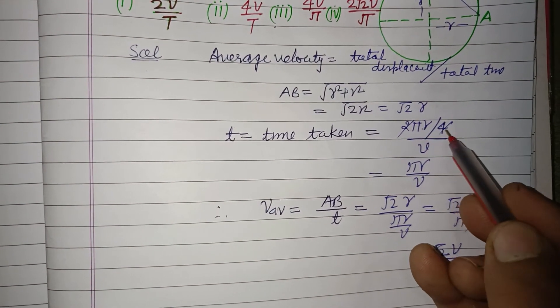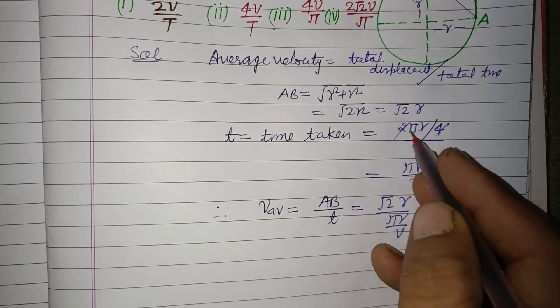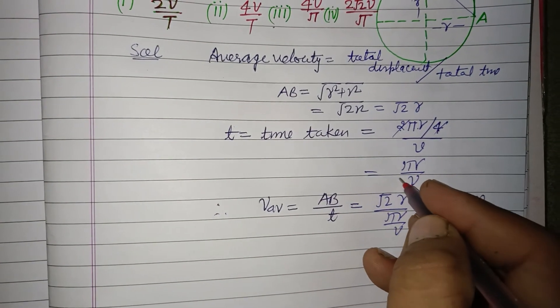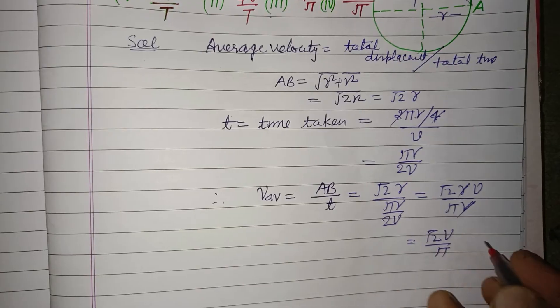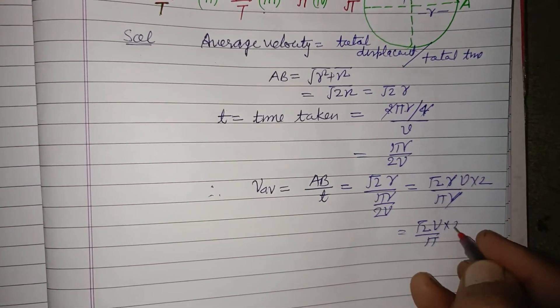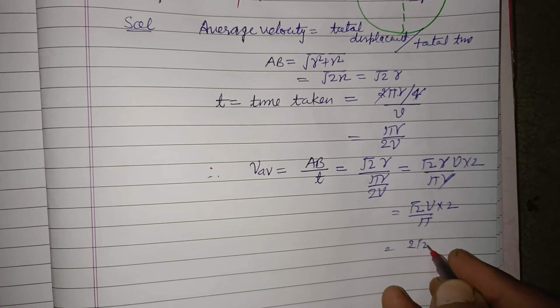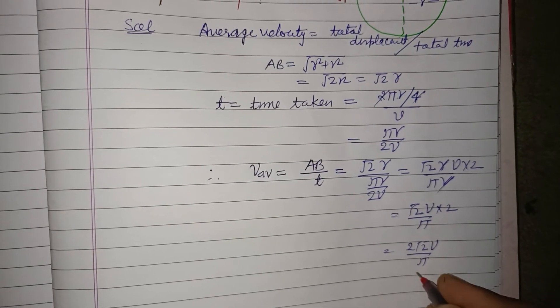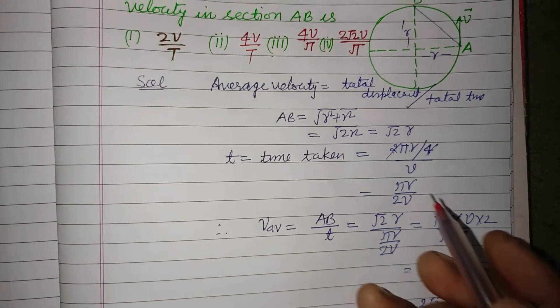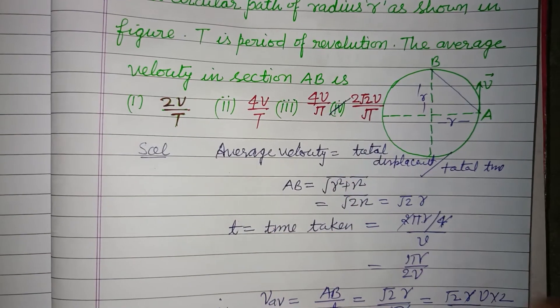Here it is πR upon 4, so this is 2 divided by 4, which is 2. So 2 under root 2V upon π is the correct answer, which is found in option 4.